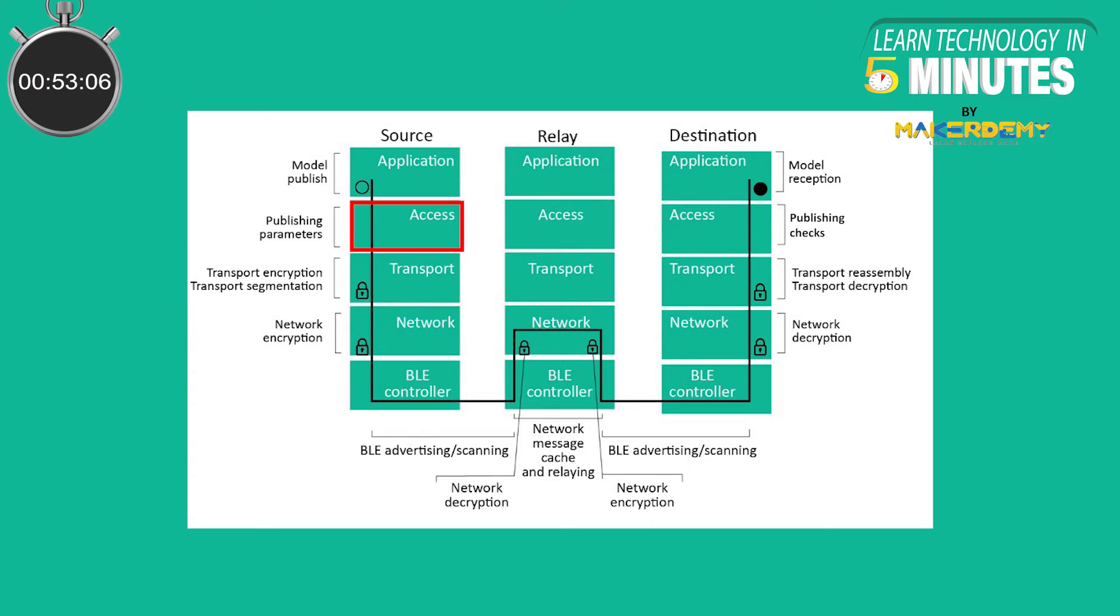The transport layer then encrypts the message with the selected application key and splits the messages into segments if necessary. Each segment is passed to the network layer which attaches a network header with a sequence number and encrypts the packet with the network key before passing it to the Bluetooth low energy controller.